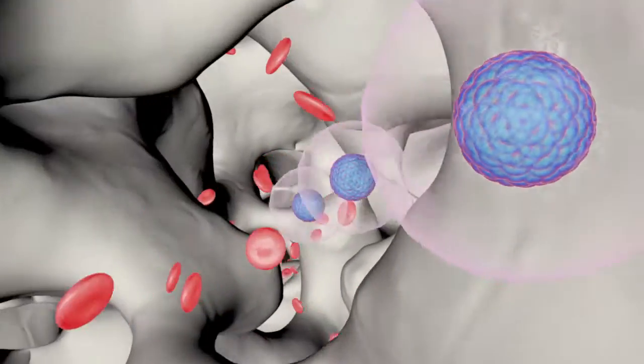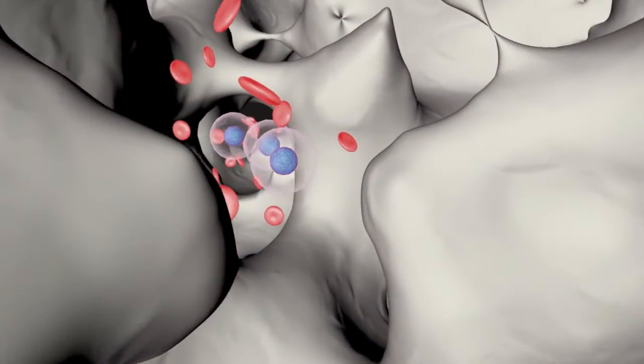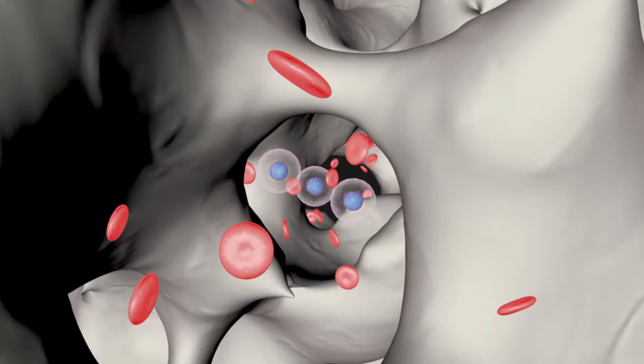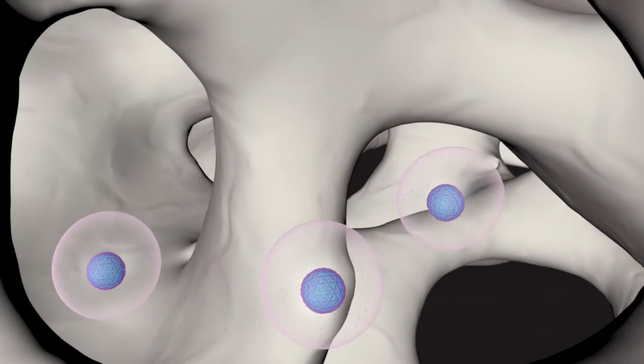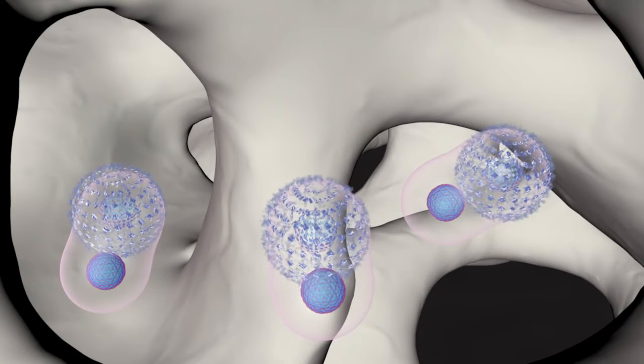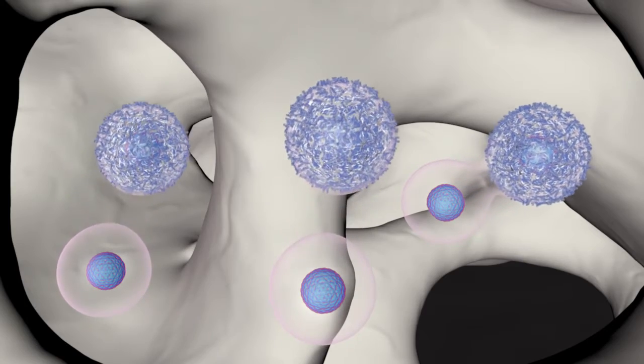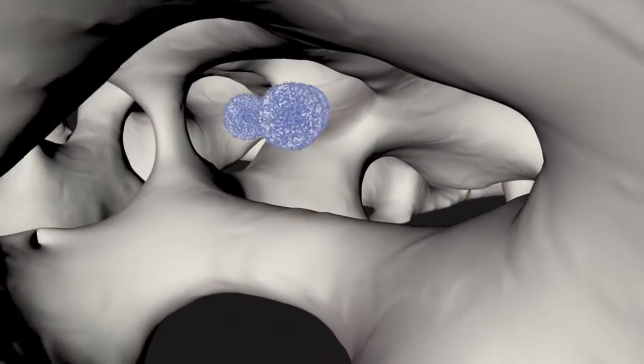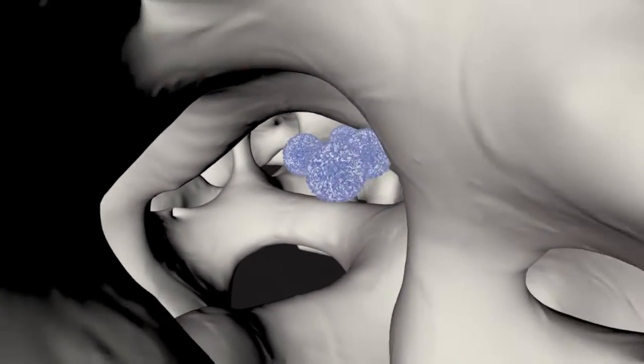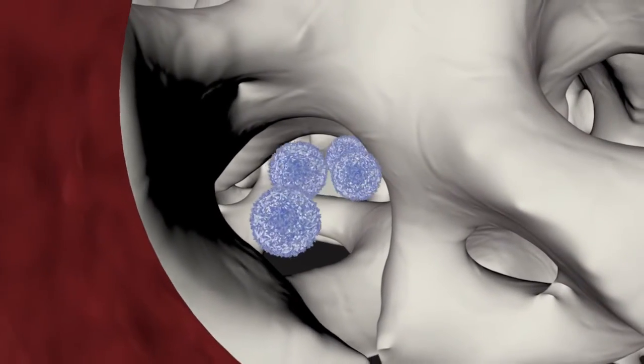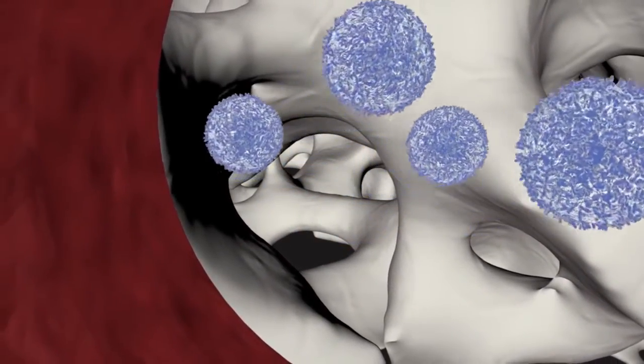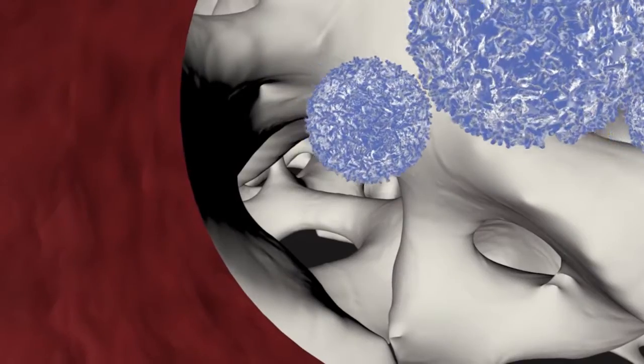The cells reach the bone marrow. In the bone marrow, the modified stem cells differentiate into monocytes and macrophages, which then enter the bloodstream.